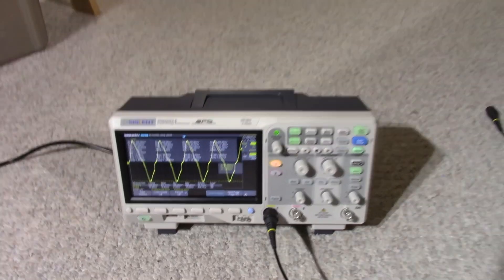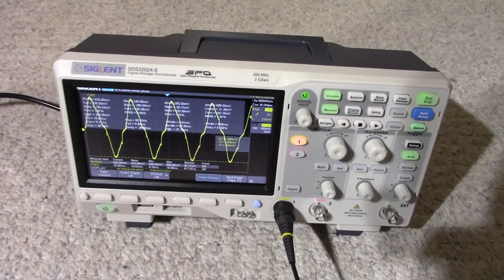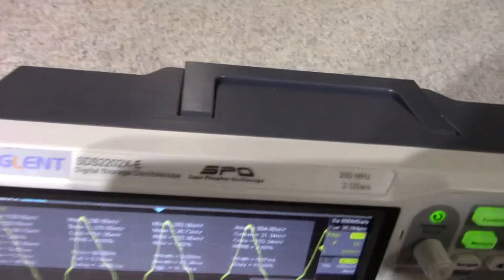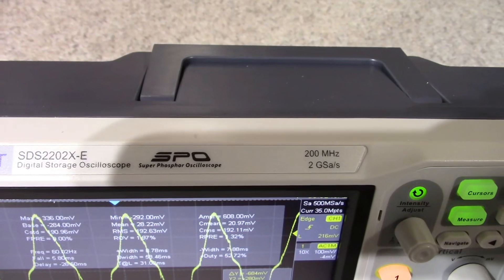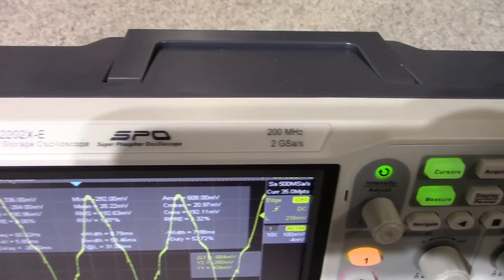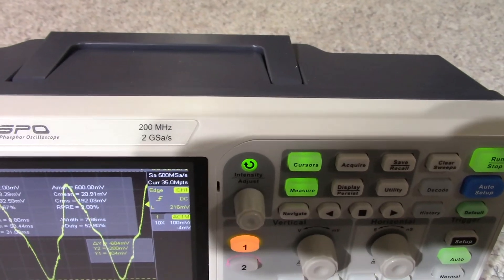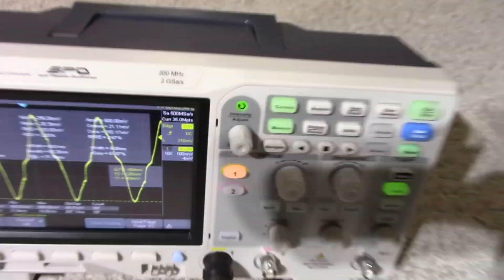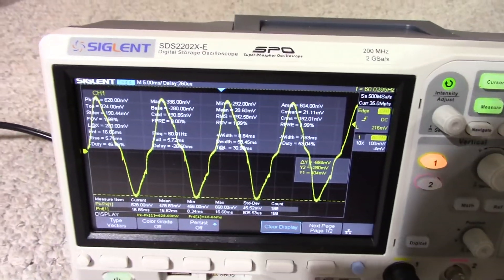Well look at that. A new to me oscilloscope. It is used, but I think it's still in production. Siglent SDS2202X-E. 200 megahertz. 2 gig sample second. Now look at that screen. Isn't that nice?